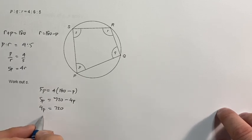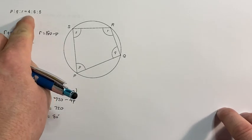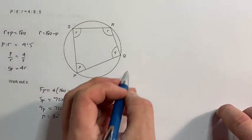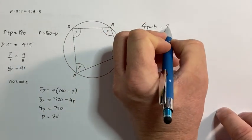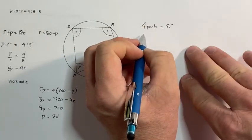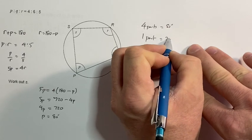So p works out to be 80 degrees. Now p represented four parts, here's the ratio kicking in. Four parts is worth 80 degrees, so therefore one part is worth 20 degrees.